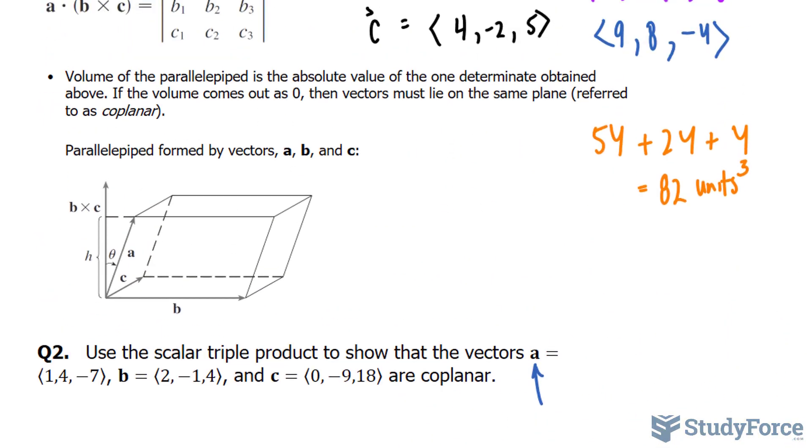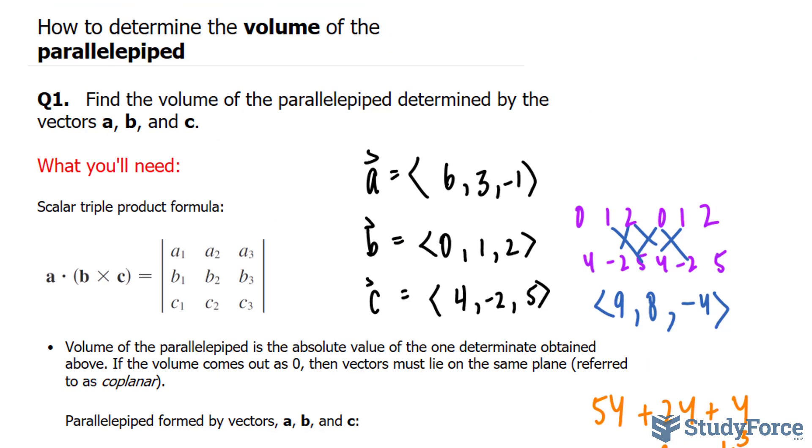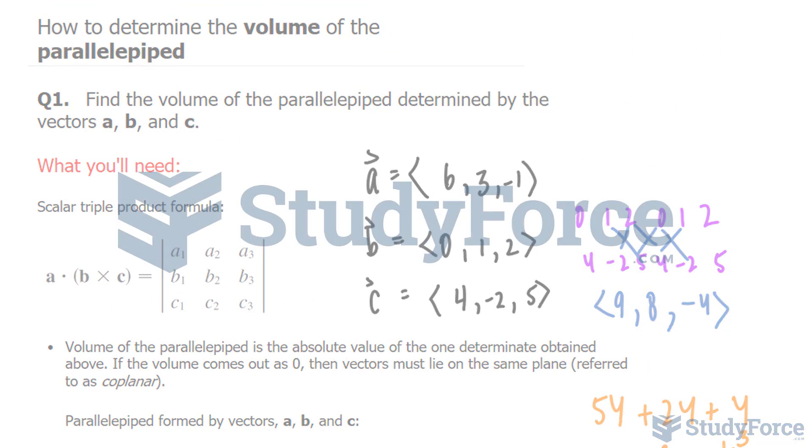This suggests that the vectors shown here are on the same plane, or coplanar. And there you have it. That is how to determine the volume of the parallelepiped.